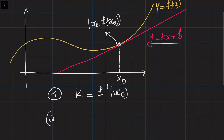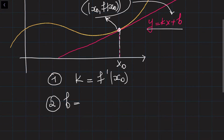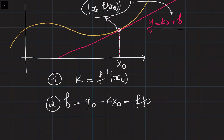In the second step, you need to find B by substituting the coordinates of this point into the equation, and by substituting K found from the first step. So B is going to be equal to y₀ minus K·x₀, so essentially y₀ = f(x₀) minus K·x₀. By finding K and B we can find the equation of the tangent line.